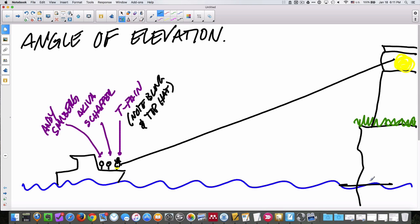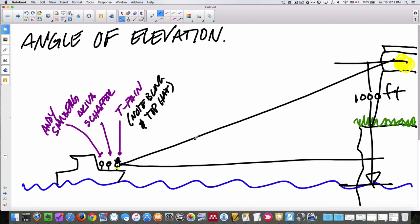Anyway, the published data would be something like, in real life, you would get that the lighthouse was a thousand feet high. And then T-Pain would be using a device to figure out this angle.